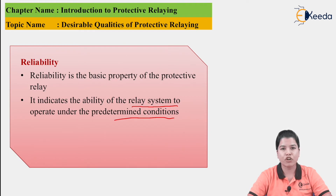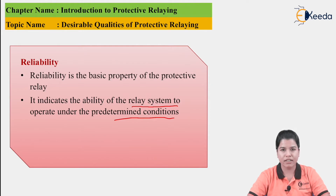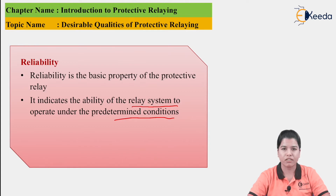The predetermined conditions are certain values of parameters such as voltage and current that are already fed into the relay. For example, if the value of current set in the relay is 5A, then up to 5A is the normal condition. But if the current goes beyond 5A, then the protective relay should operate. This is the predetermined condition already fed to the relay.